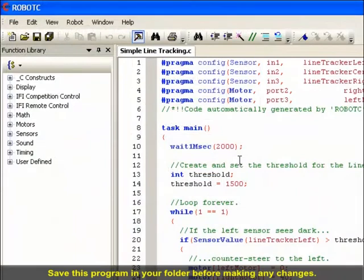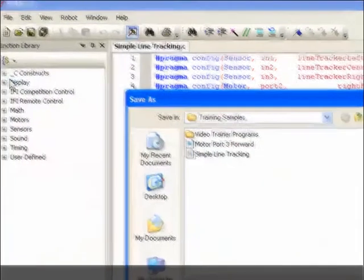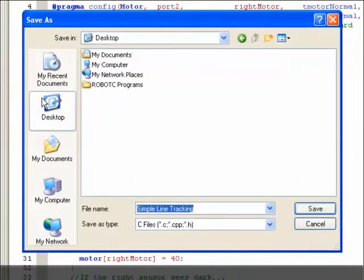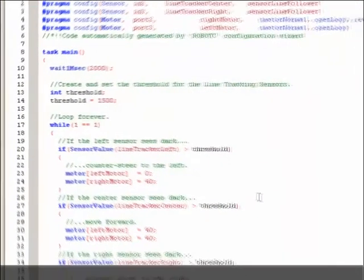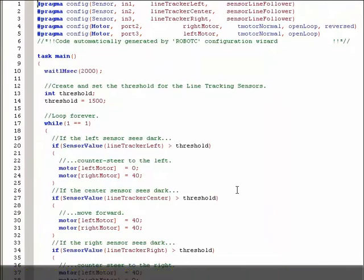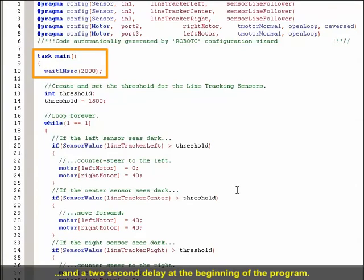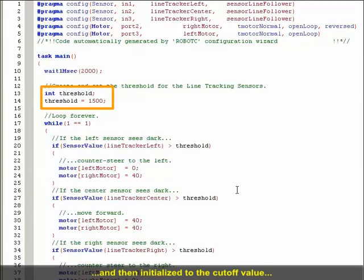Save this program in your folder before making any changes. You're probably familiar with much of the code in this sample program by now. It starts off with TaskMain and a two-second delay at the beginning of the program. Next, an integer variable, Threshold, is declared and then initialized to the cutoff value that will be used with the line tracking sensors.